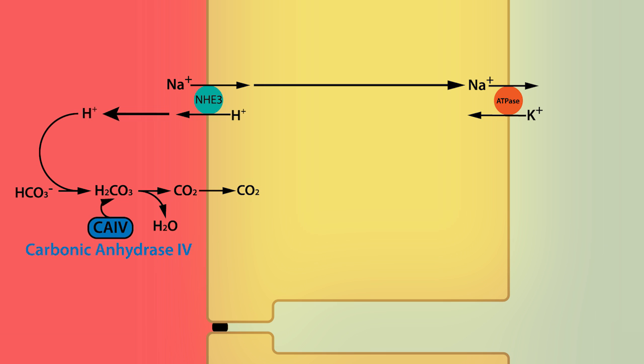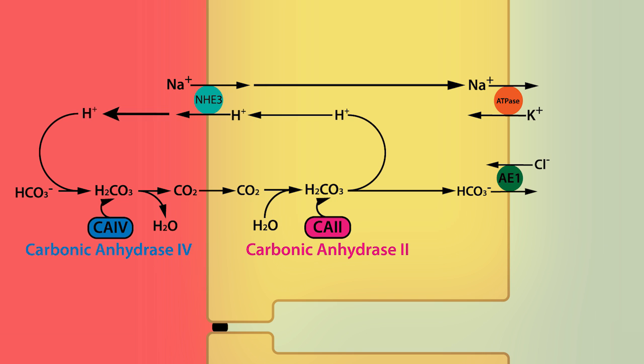Second, bicarbonate generated inside the cell from the conversion of intracellular carbonic acid is transported out of the cell by the basolateral chloride-bicarbonate exchanger, or AE1 exchanger, and not by the sodium-bicarbonate exchanger which is found in the proximal tubule.